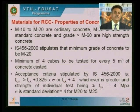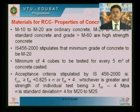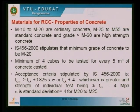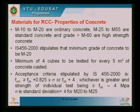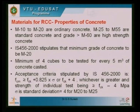IS 456 states never use concrete less than M20 for reinforced concrete. At least 4 cubes must be tested for every 5 cubic meters of concrete cast. The acceptance criteria: the mean strength FCM should be greater than or equal to FCK plus 0.825 times sigma, or FCK — whichever is greater — and individual test strength should never be less than FCK minus 4. For M20 concrete, the range should be between 16 to 24 MPa.